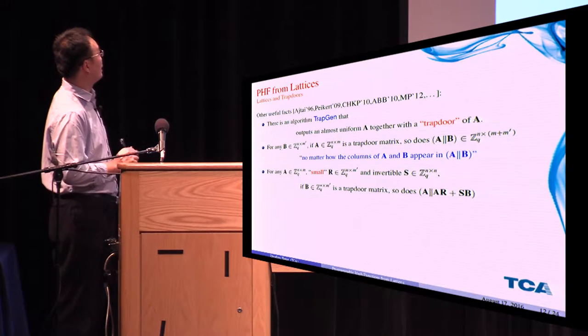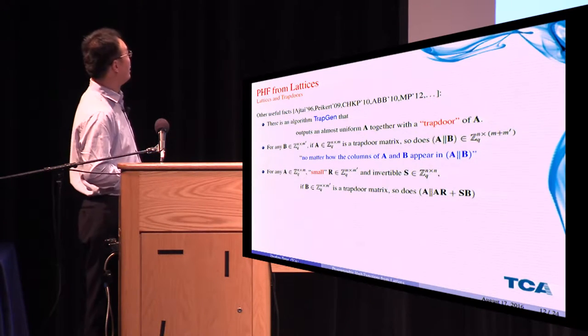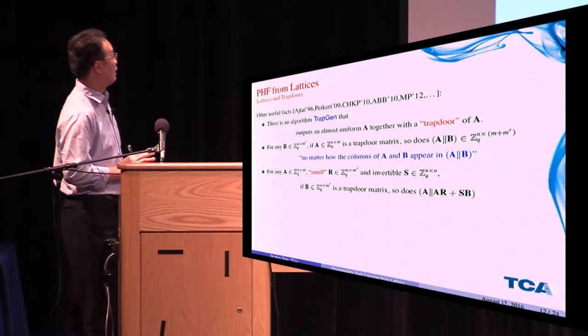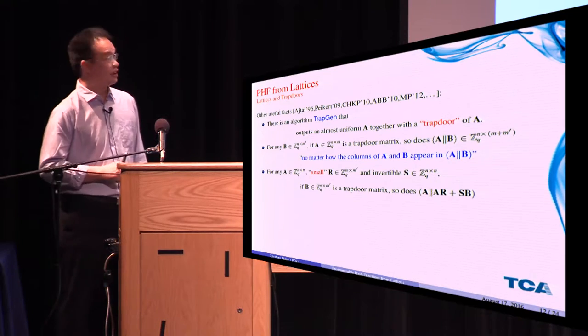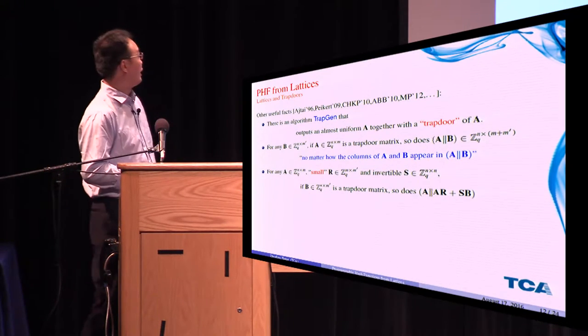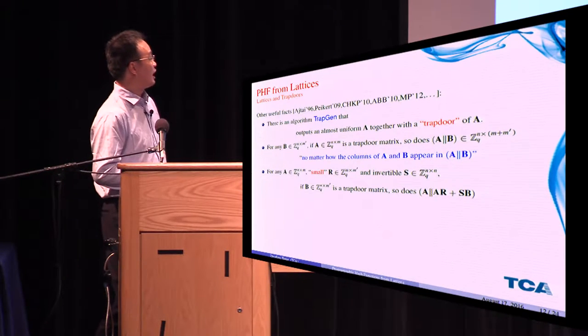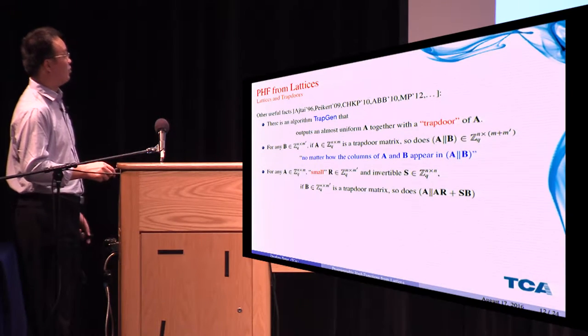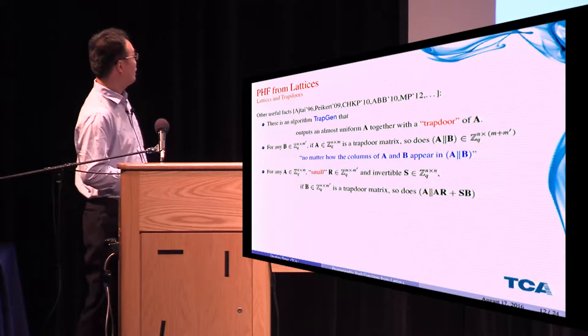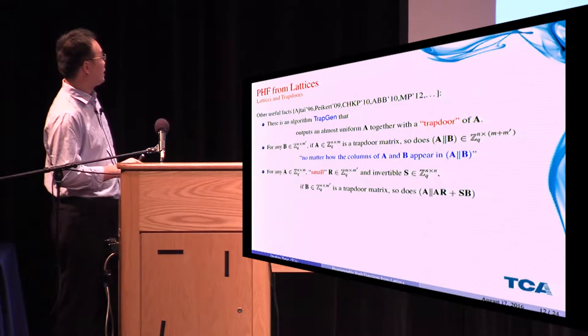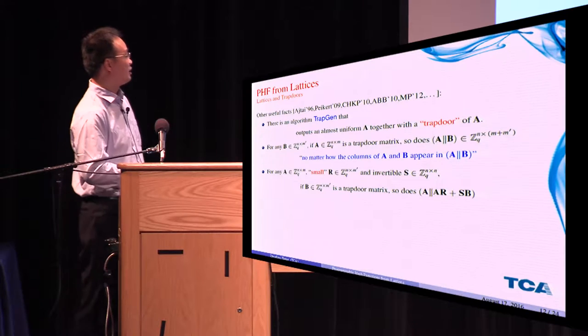Also we use some other useful facts in the literature. The first one is there is a TrapGen algorithm that outputs an almost uniform matrix A together with a trapdoor of A. The second fact is that for any B, if A is a trapdoor matrix, so is A concatenated with B. The third one is for any A and a small R and an invertible S, if A or B is a trapdoor matrix, so is this matrix.